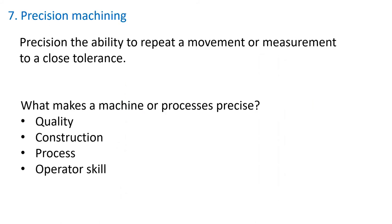Section 7: Precision Machining. Precision is the ability to repeat a movement or measurement to a close tolerance. What factors make a machine or process precise? The quality of the machine, its construction, the process being used, and the operator's skill — or a combination of all of the above.